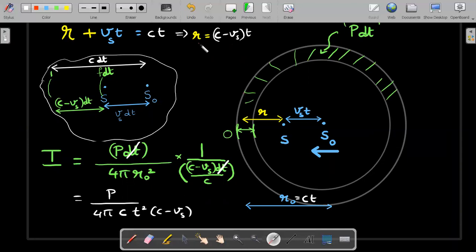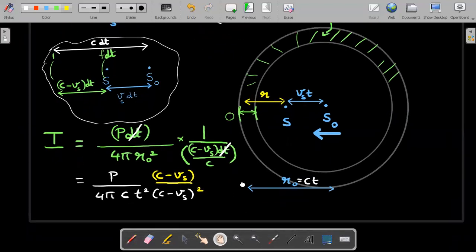We are desperate to write the answer in terms of R square. R square means I need C minus Vs into T whole square. So what I'll do is multiply and divide with that term. Because I'm desperate to get that term, I'm going to multiply and divide. I put a term on the top and squared it at the bottom. That would make our job easier.